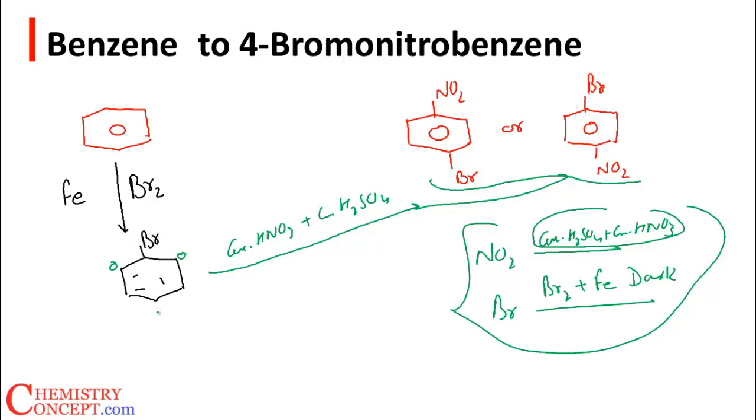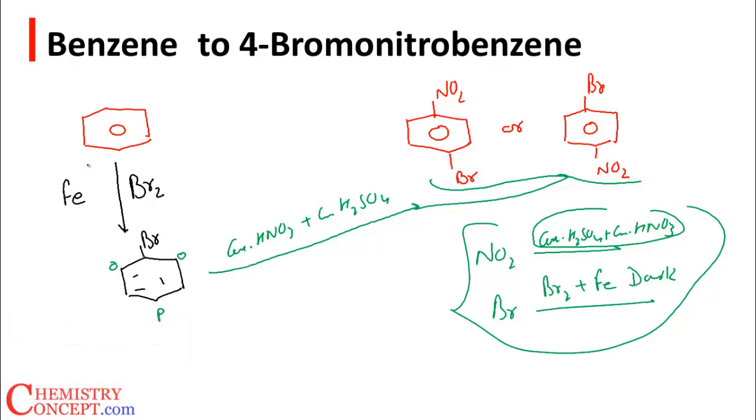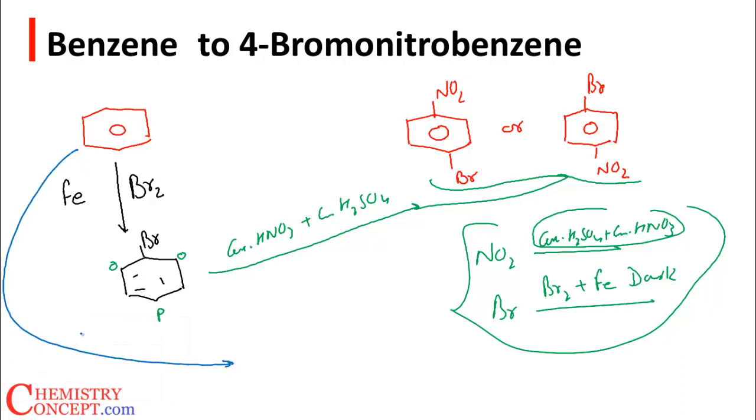directed to either ortho position or para position, and para is the major one. But by mistake, if I switch these steps - first carry out nitration reacting with HNO3 and H2SO4, then it will